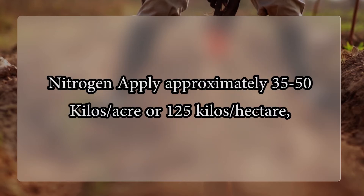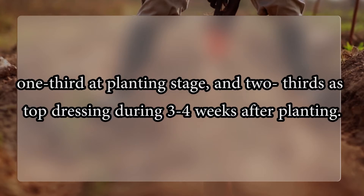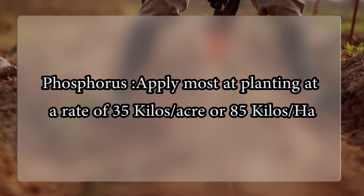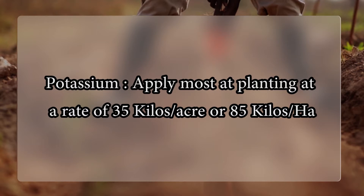The compound fertilizers commonly used are NPK 15-15-15 or NPK 16-16-16. Apply 5 bags of 50 kg compound fertilizer 10 to 14 days after planting and top dress with 2.5 bags of sulfate of ammonia or 1.5 bags of urea per hectare. Dibble and bury all fertilizers. For nitrogen, apply approximately 35 to 50 kg per acre or 125 kg per hectare — one third at planting stage and two thirds as top dressing during 3 to 4 weeks after planting. For phosphorus and potassium, apply most at planting at a rate of 35 kg per acre or 85 kg per hectare.